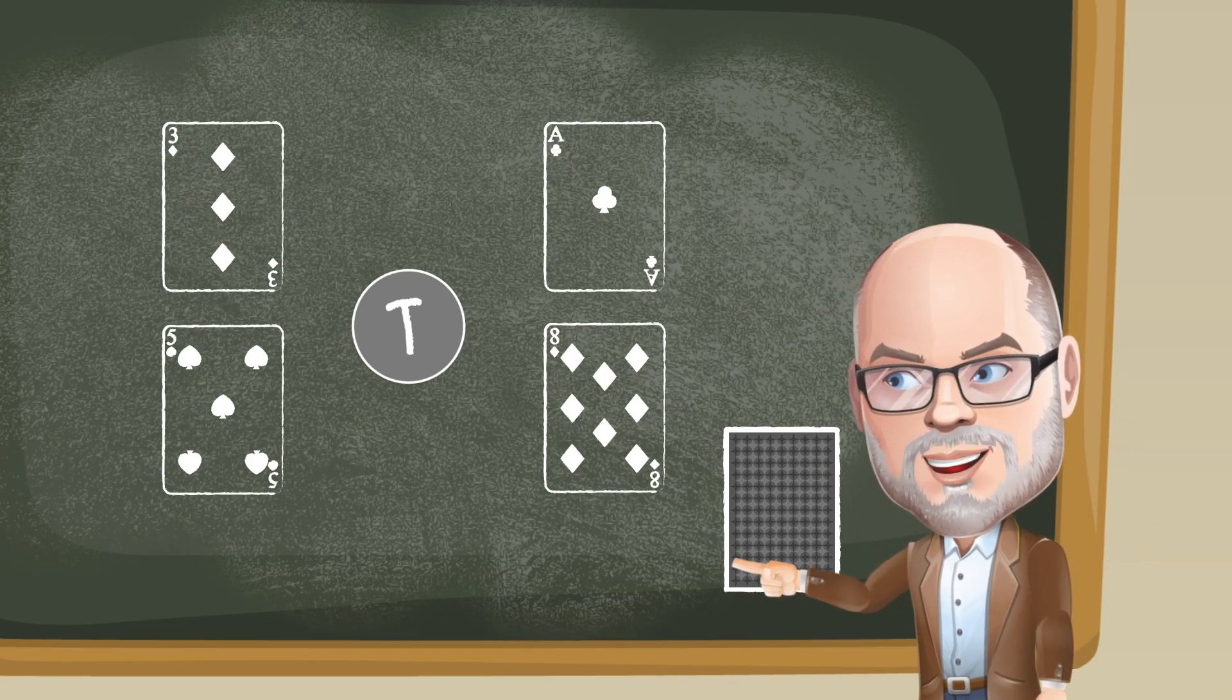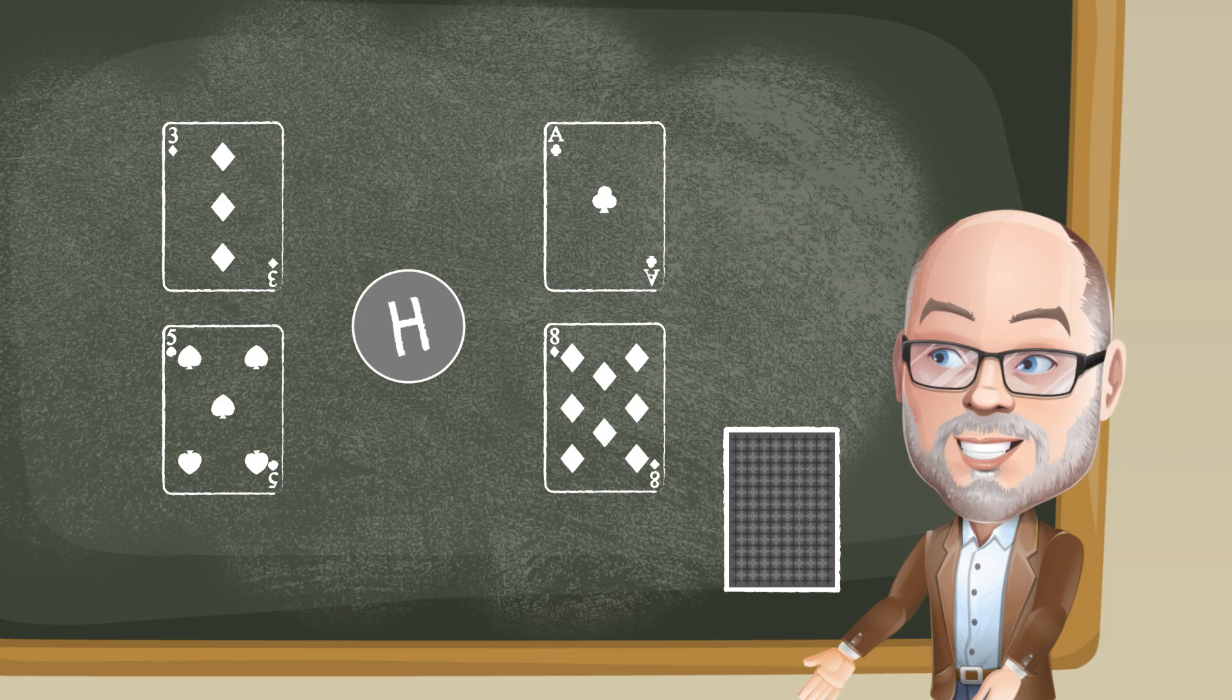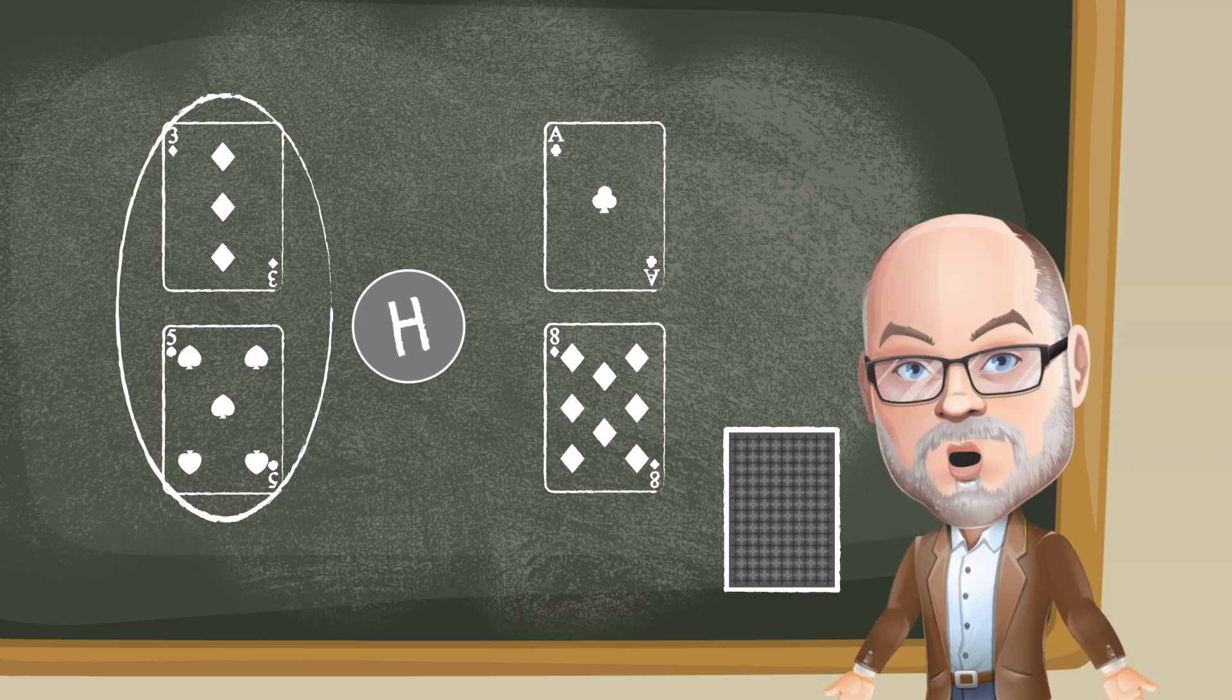Then the players would make new fractions and flip the coin. This time it's heads, so the larger fraction wins the round.